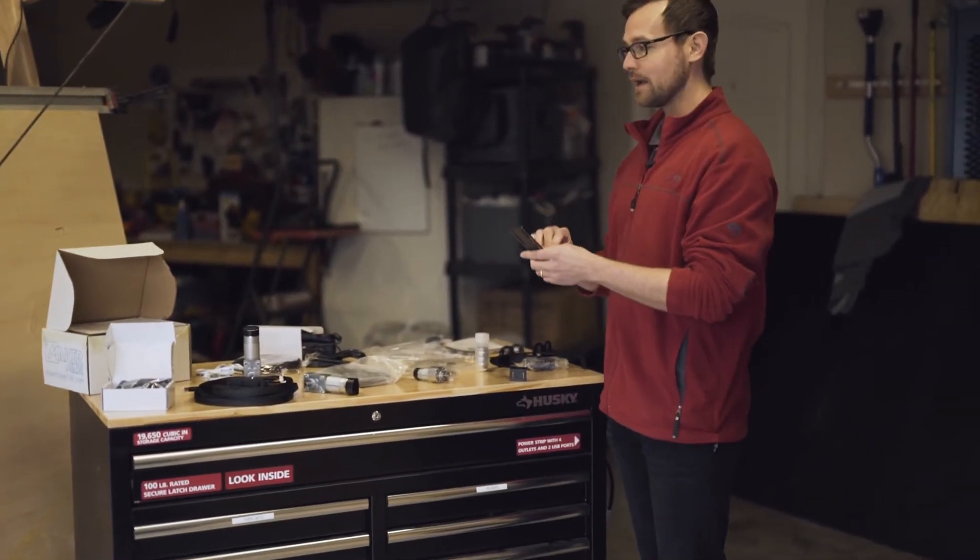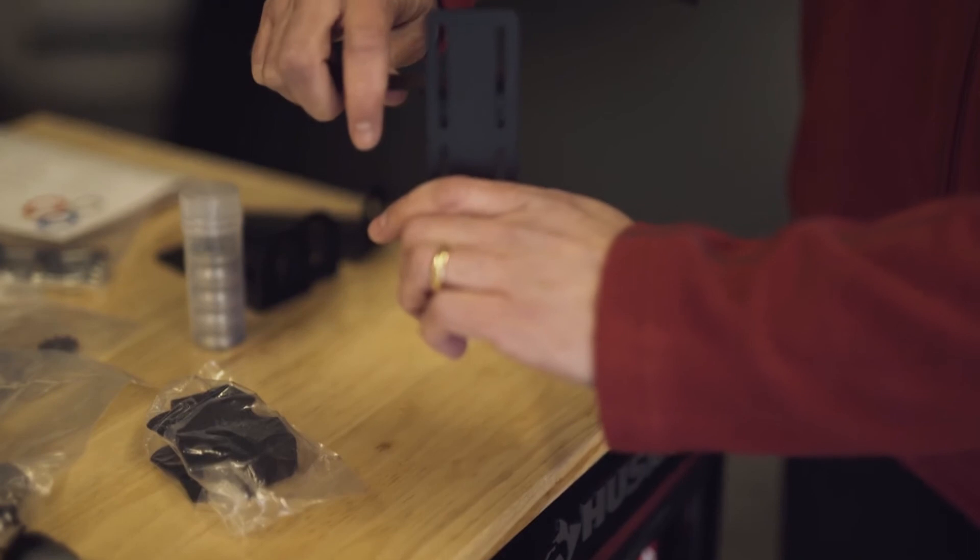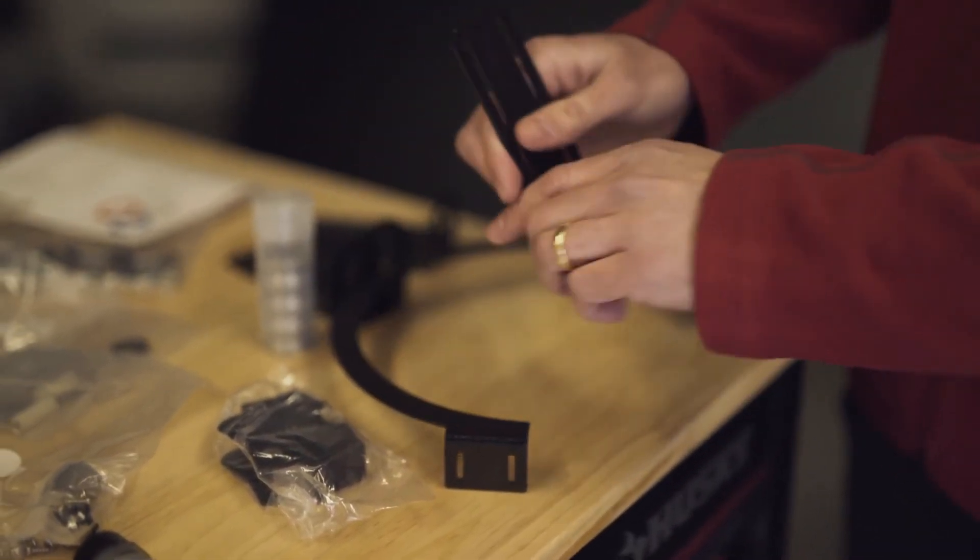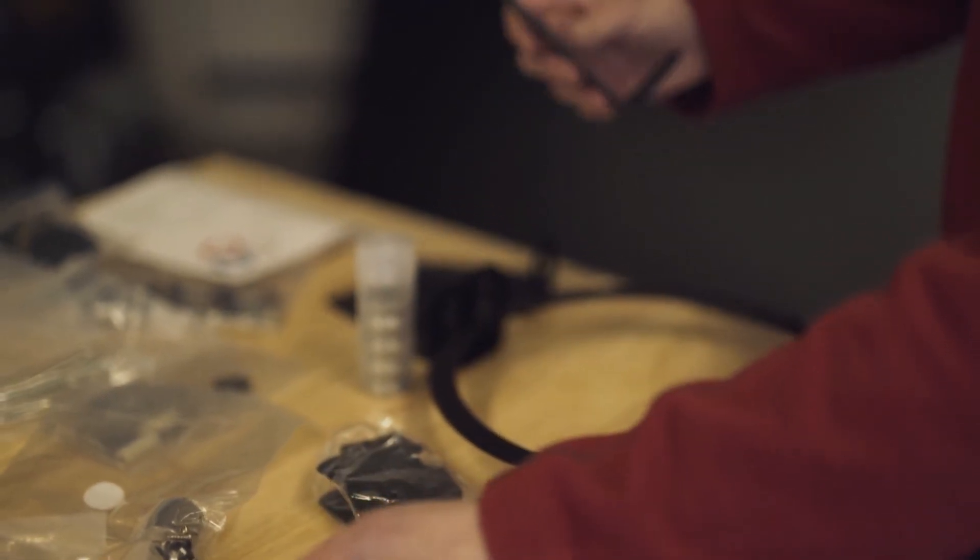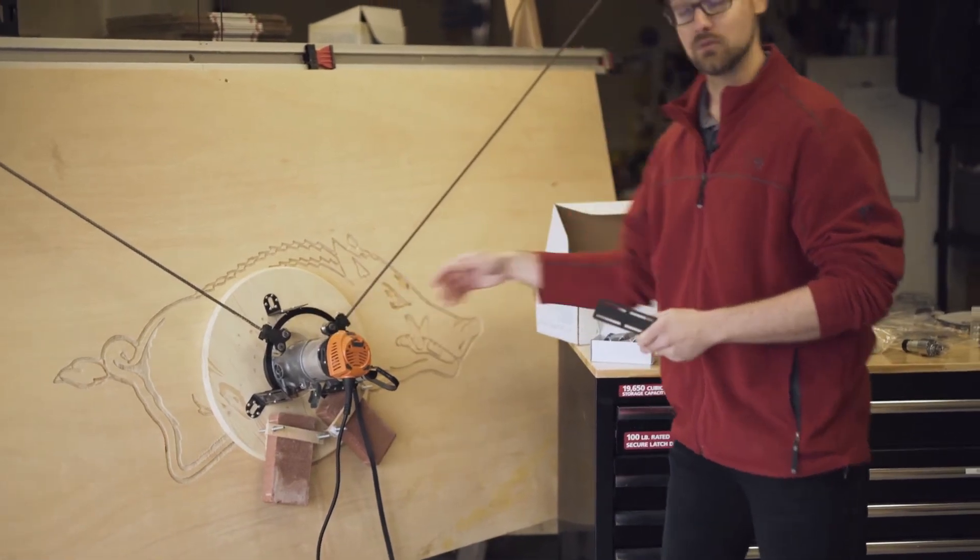Next, we've got L brackets. These L brackets actually connect the ring to the wooden sled itself, just like that, and then connect the Z axis and the coupler to the sled and to the router as well.